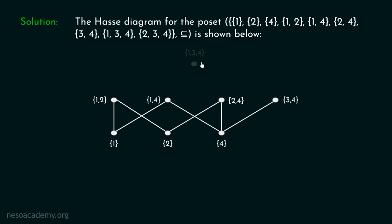We can then place the next sets at the appropriate levels and draw edges between the corresponding vertices. This is the final Hasse diagram which we have.